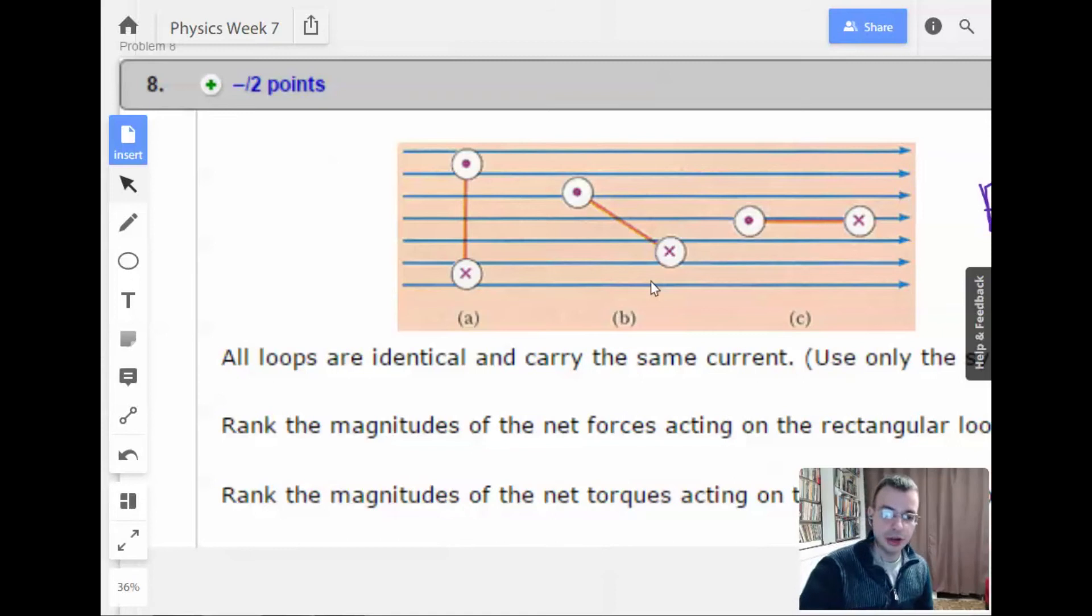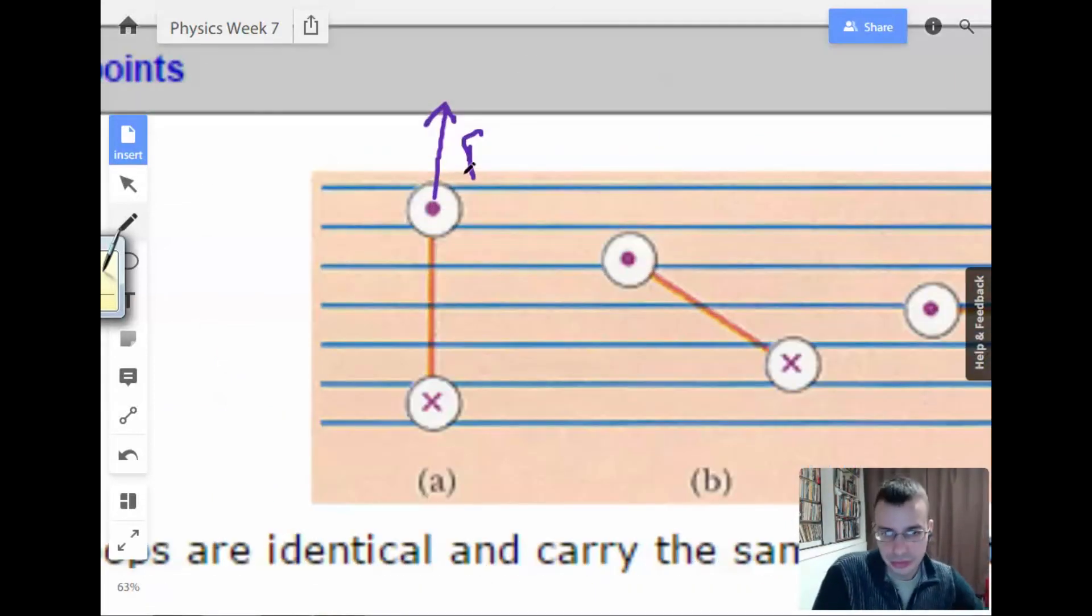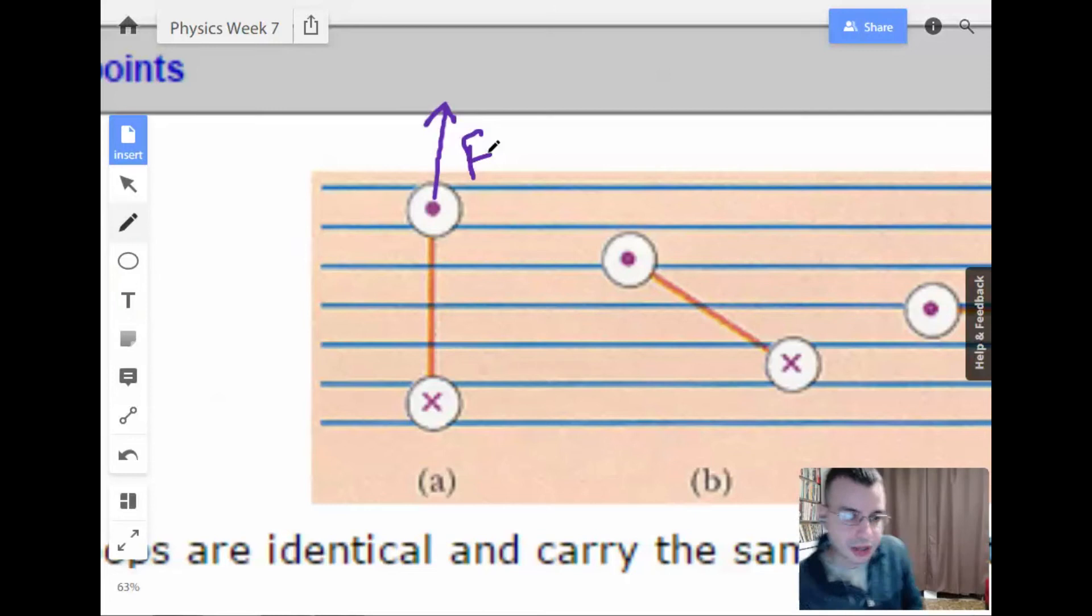I'm gonna start at the top right here. So we have, let's go out of the screen, V or I, same, I gotta use V. V cross B. So, it's gonna be upward. So the top part of this wire, the force is gonna be up. Now as we go down the wire, it's gonna be V cross B. So, it's gonna be out of the board.